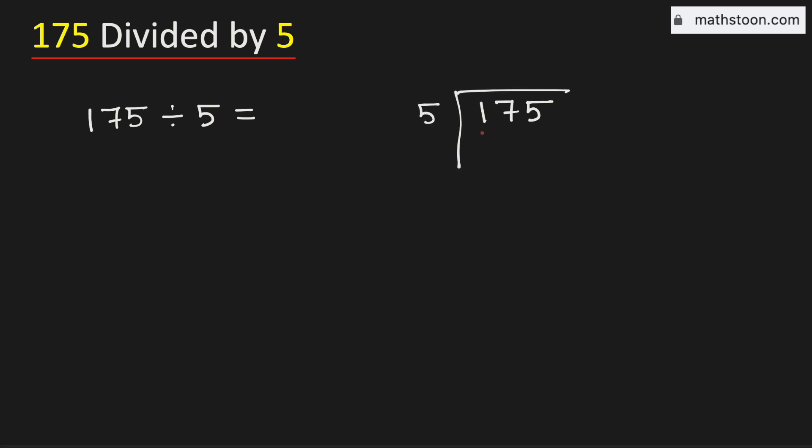Consider the first digit 1. 1 is less than 5, that is why we will consider the number 17. We know that 5 times 3 is 15. Subtract, we get 2.